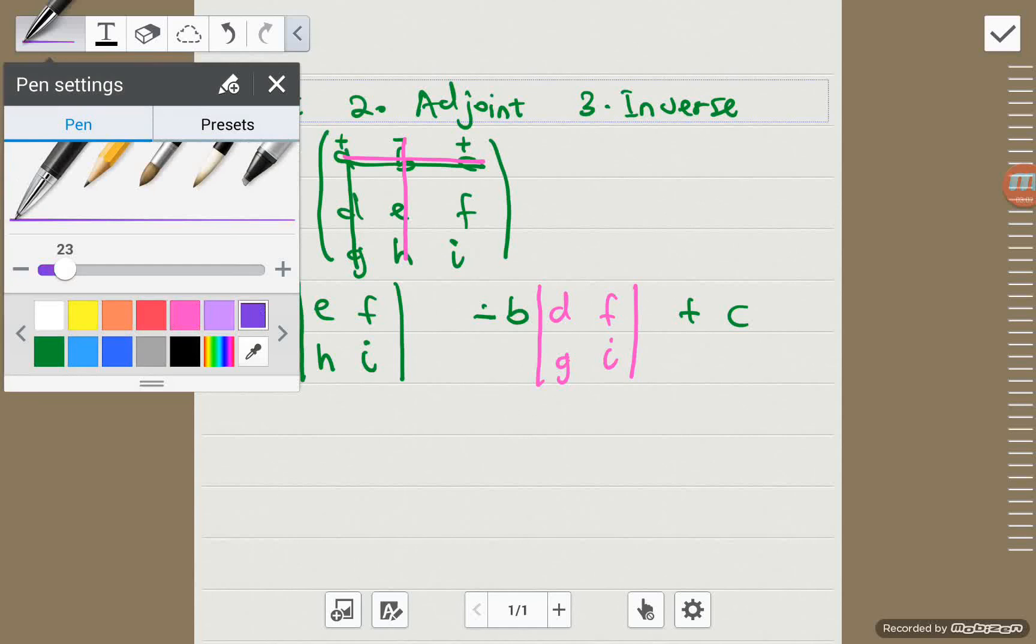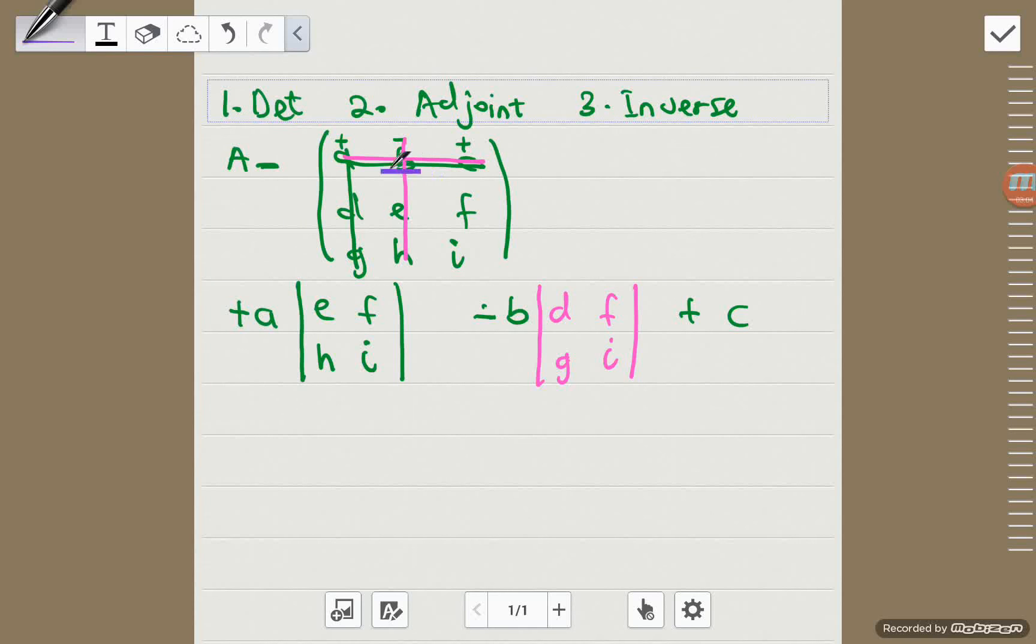Then we do the same for the last component, which is C, cross out the row and the column in which C can be found, and find the determinant of the remaining minor matrix, which is D, E, G, H. Now we know how to find the determinant of a 2x2 matrix,